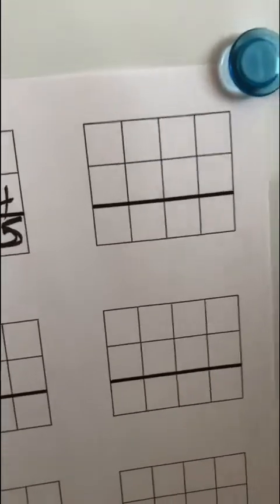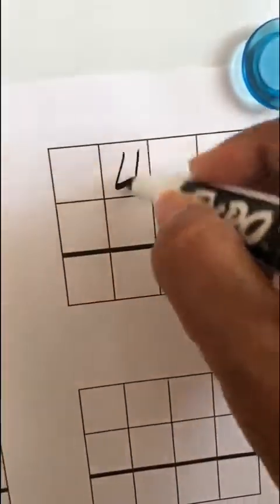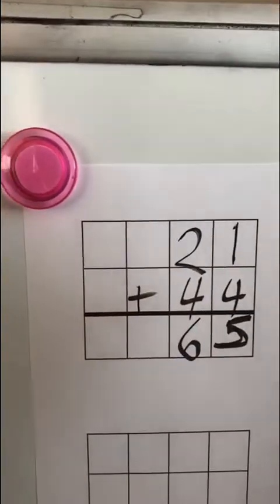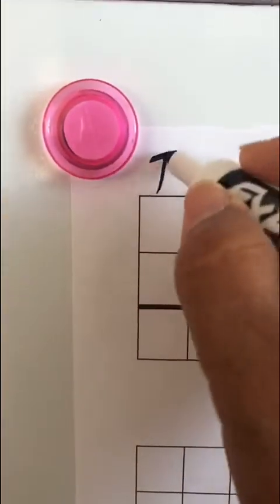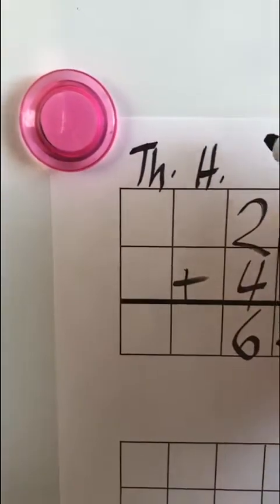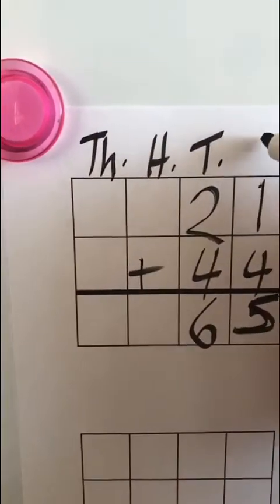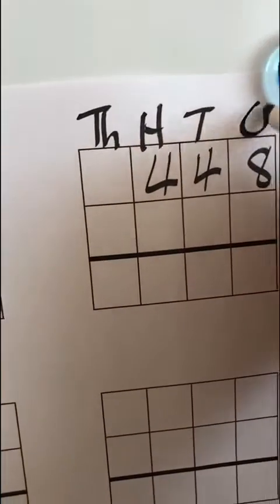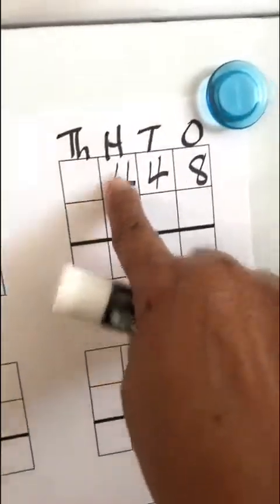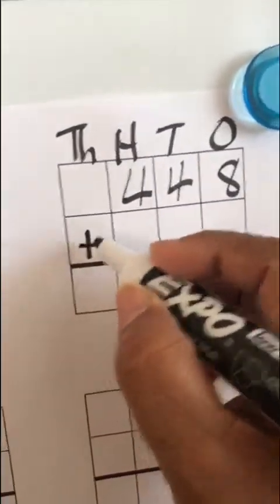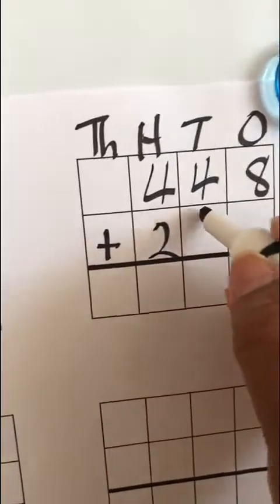But, let's say we had 448. Why don't we put our place value at the top? This would be our thousands, this would be our hundreds, this would be our tens, and our ones. Alright? So, we are going to have our thousands, our hundreds, our tens, and our ones. So, now we have 448, and we are going to add 269.